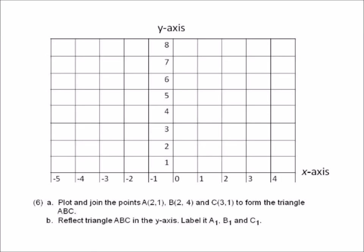Number six: plot and join the points A(2,1), B(2,4), C(3,1) to form triangle ABC. Then reflect triangle ABC in the y-axis and label it A1, B1, and C1. First plot and join those points — A(2,1), B(2,4), C(3,1). Take your ruler and join them to form triangle ABC.